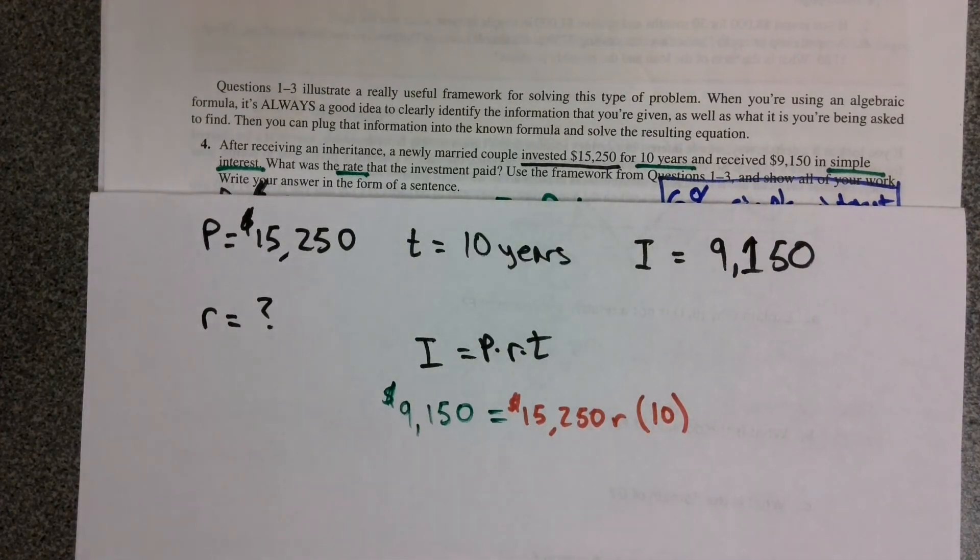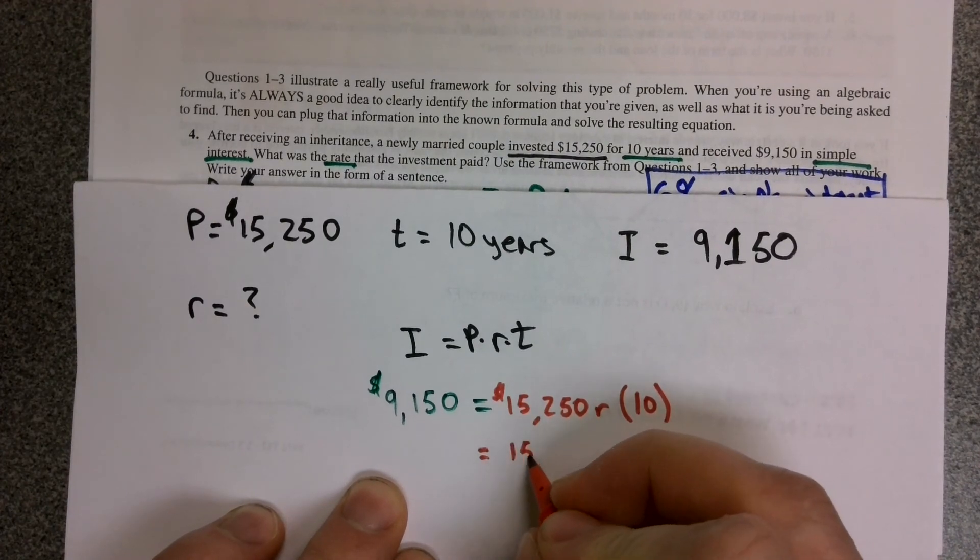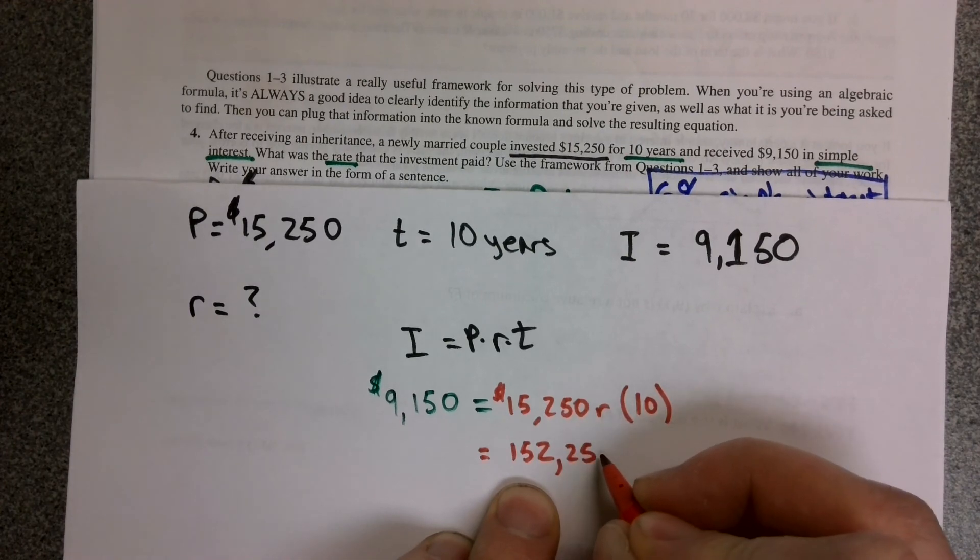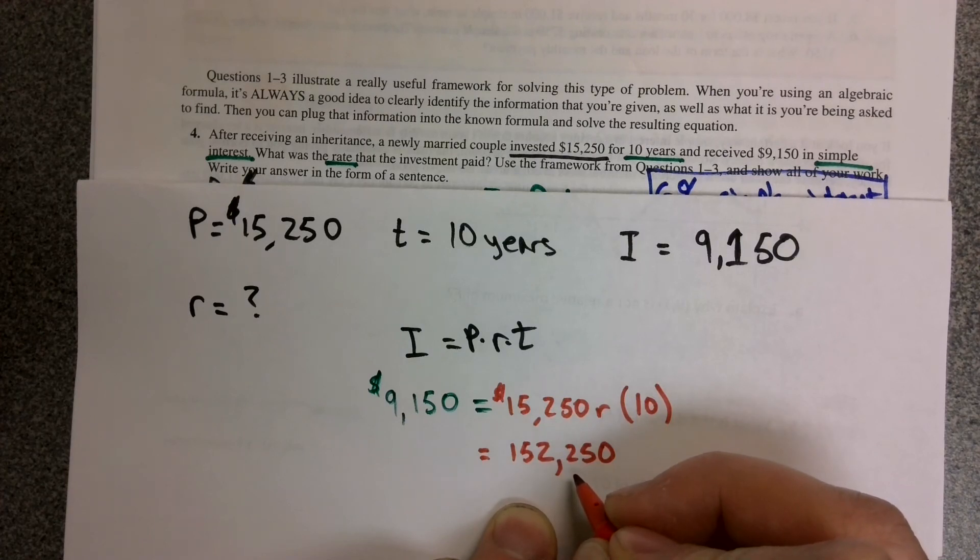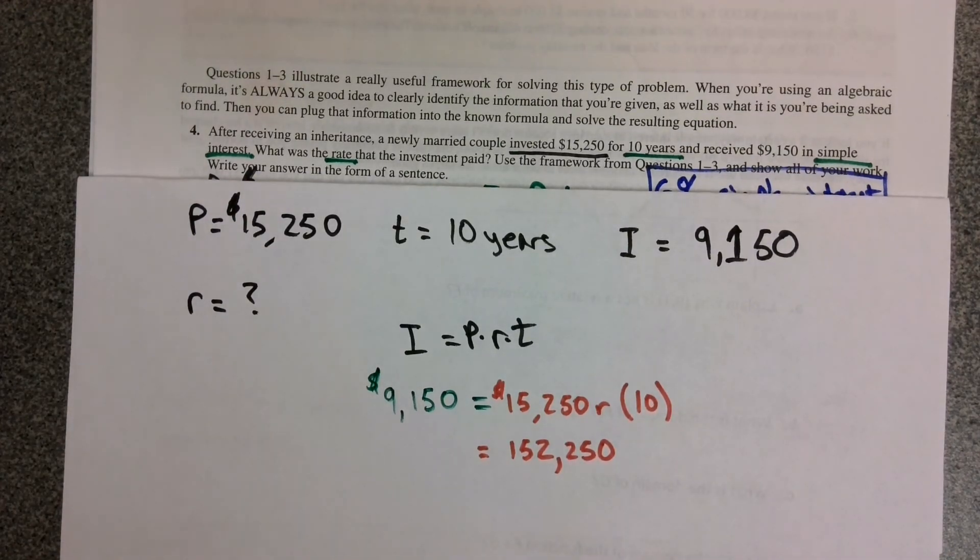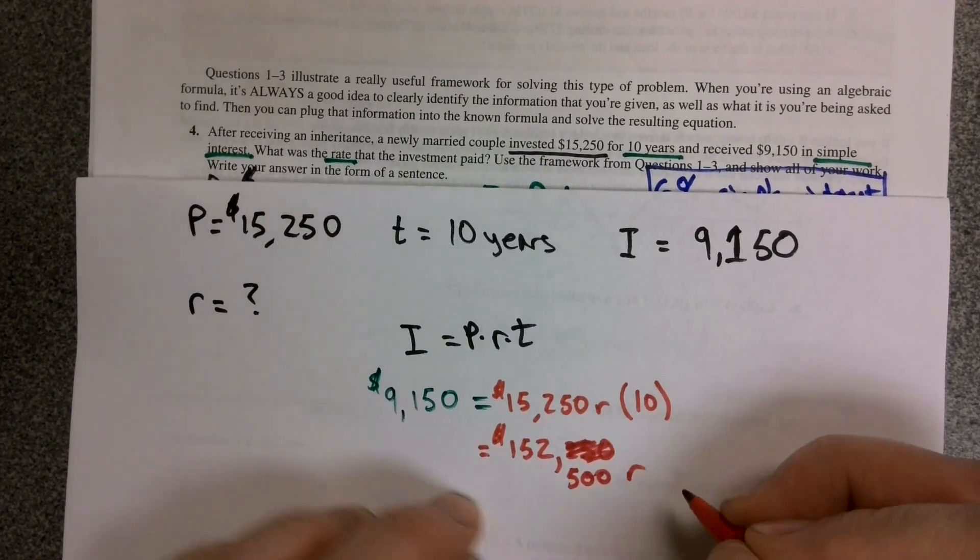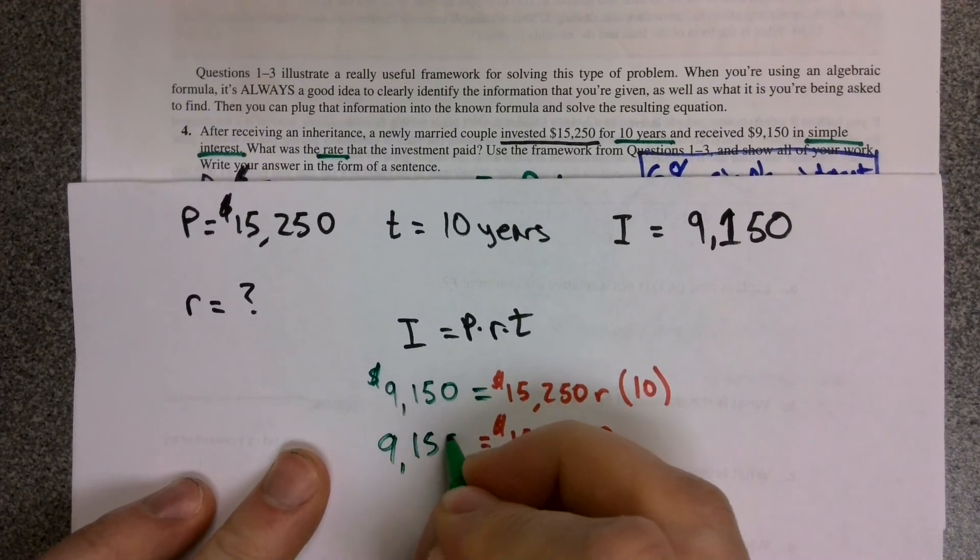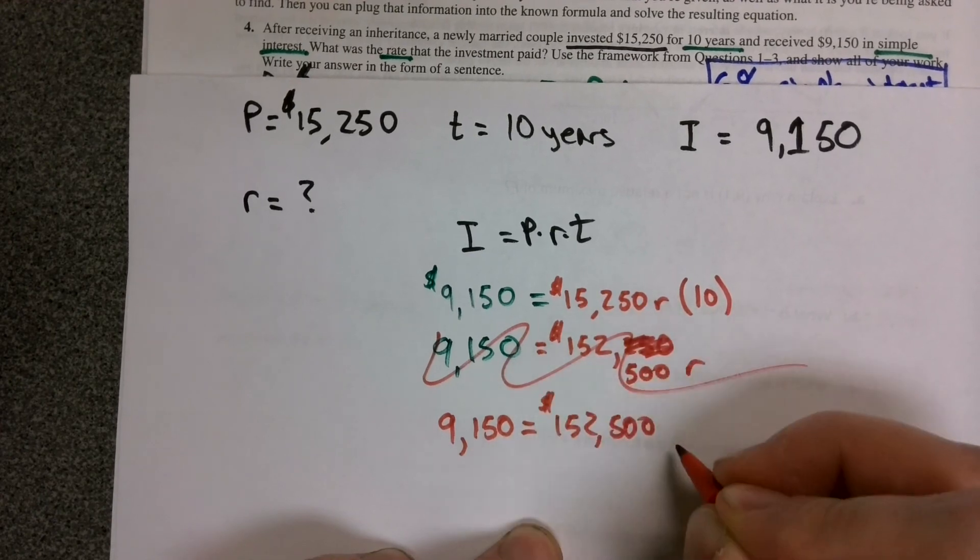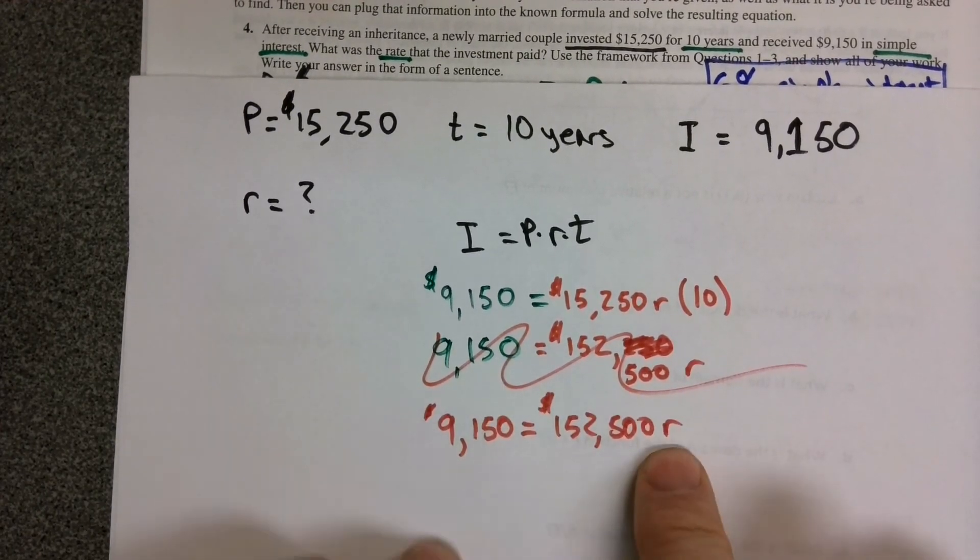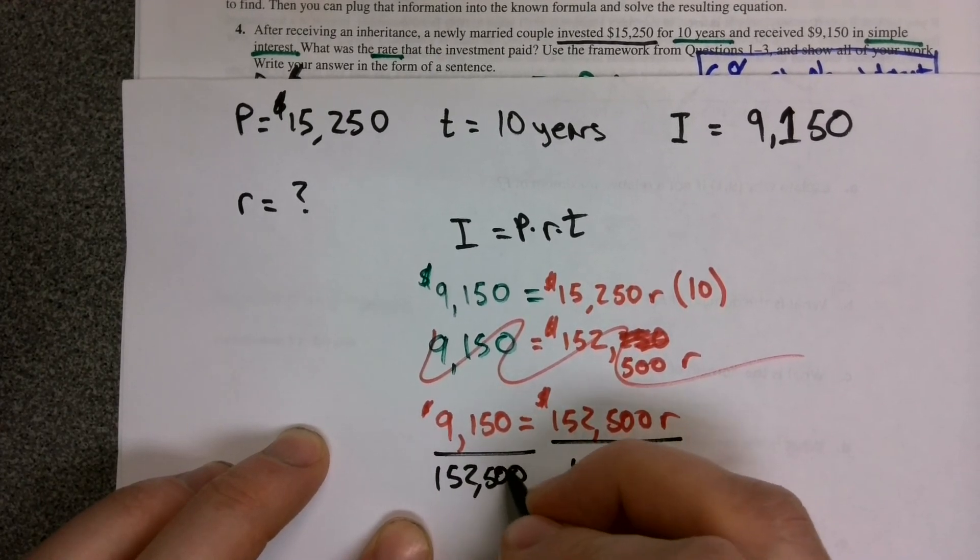You might remember this from high school algebra class. The order you multiply things does not matter. So we could multiply the 10 times the 15,250. That ends up being 152,500. And that's going to equal this 9,150. Let me clean this mess up. So we're going to do $9,150 equals $152,500 times R. So we'll just divide both sides by this $152,500, and that will give us the decimal equivalent of the interest rate we earned.